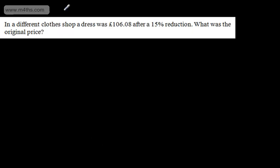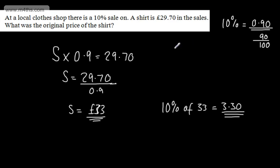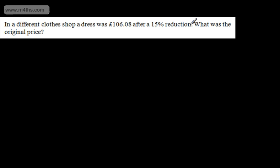In a different clothes shop, a dress was £106.08 after a 15% reduction. What was the original price? So again, we've got now something that's going to increase. So when we're looking at our multipliers, our multipliers will always be less than one. So in this particular case, we have a 15% reduction. So 15% reduction is going to give me a multiplier of 0.85. It's 85% of the original, or 85 over 100 of the original price.